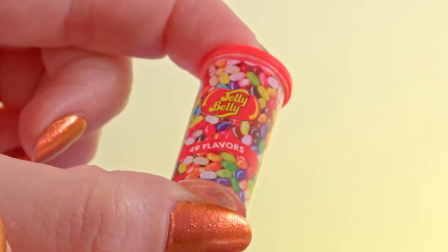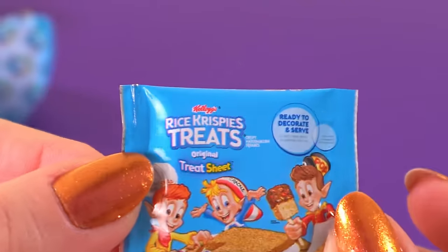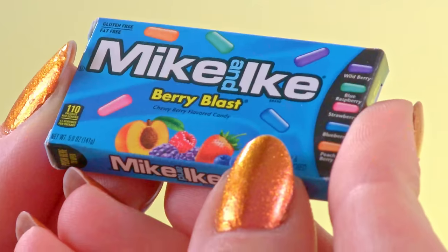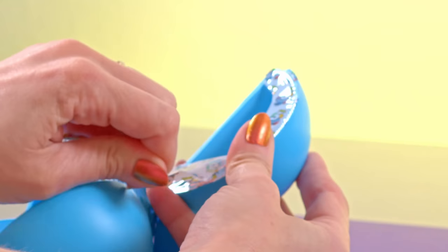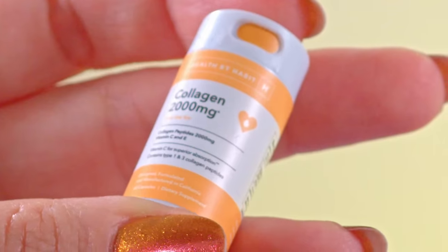How cute are these jelly bellies? That could be a cute cake. Oh my, it's Rice Krispie. Rice Krispie treats are so good. How would a mini Mike and Ike cake look? Is there even room for cake in there? What is this one? From sweet snacks to collagen.